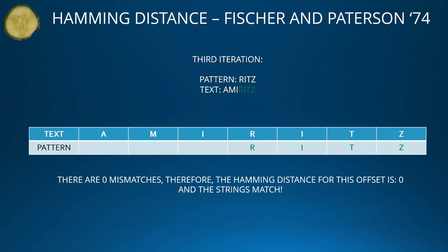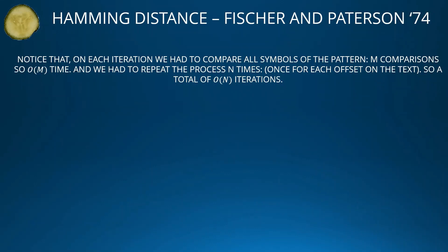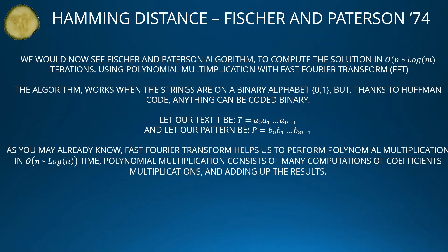And the strings match. Notice that on each iteration we had to compare all M symbols of the pattern — O(M) time — and we had to repeat the process N times, once for each offset in the text, giving a total of O(N) iterations and thus O(N × M) overall.